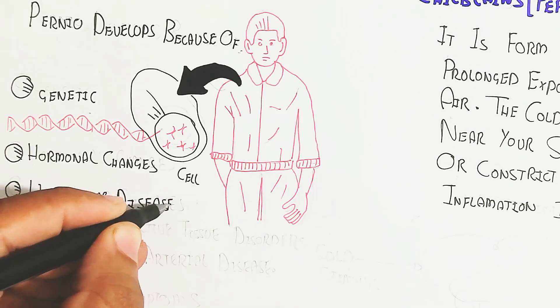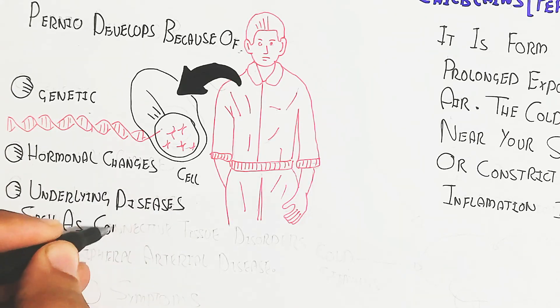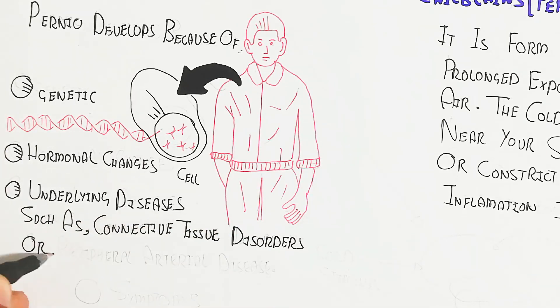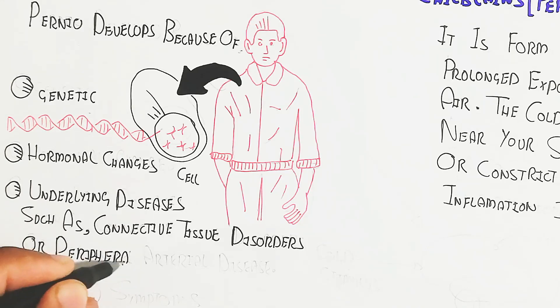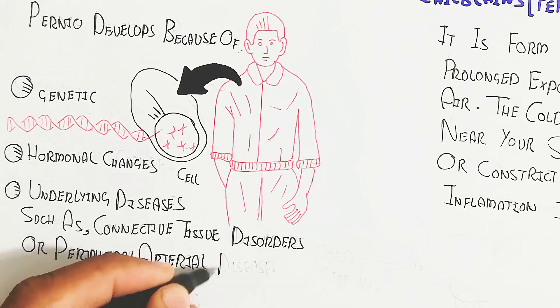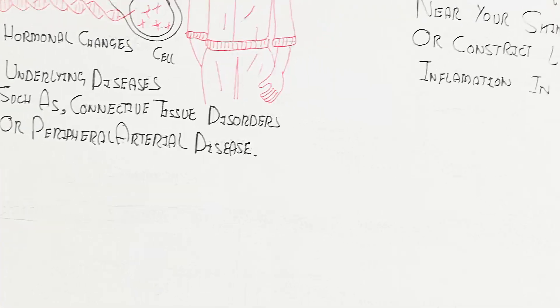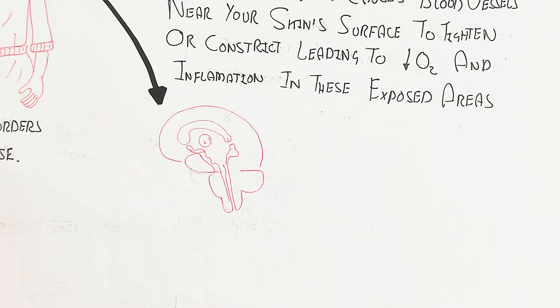On the other hand, hormonal changes like hypothyroidism and underlying diseases such as connective tissue disorders or peripheral arterial disease are also involved. On the other hand, low blood pressure.